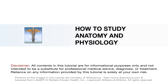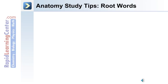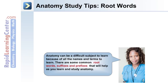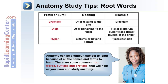In this section we'll discuss tips on how to study anatomy and physiology. The first tip is learning root words. Because there's a large number of names and terms you're required to learn when you study anatomy, knowing some root words, suffixes, and prefixes will make it easier.